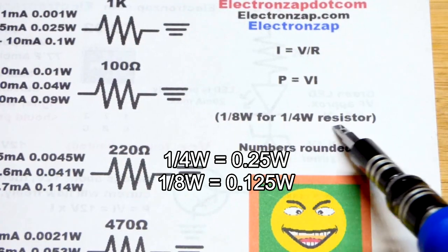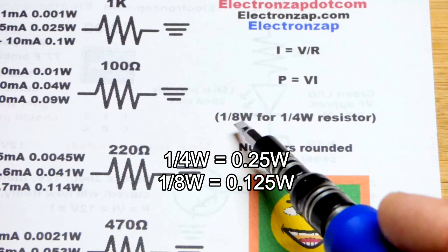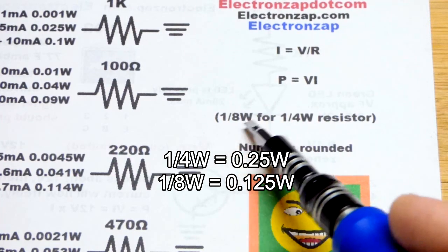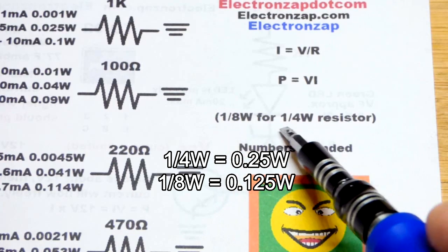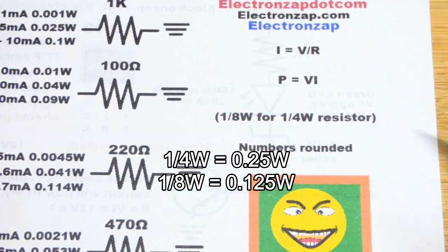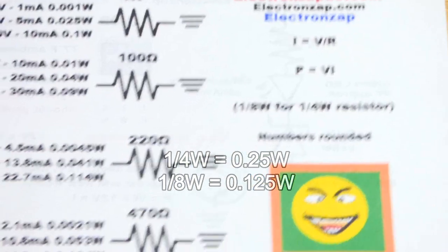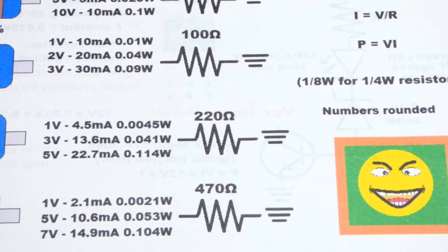Quarter watt is usually the rated value of resistors, but still you want to keep the power dissipation, the wattage, about half of their rated value. So about an eighth of a watt. One fourth of a watt is 0.25 watts and one eighth of a watt is 0.125 watts, which I kept below that number in all of these calculations.